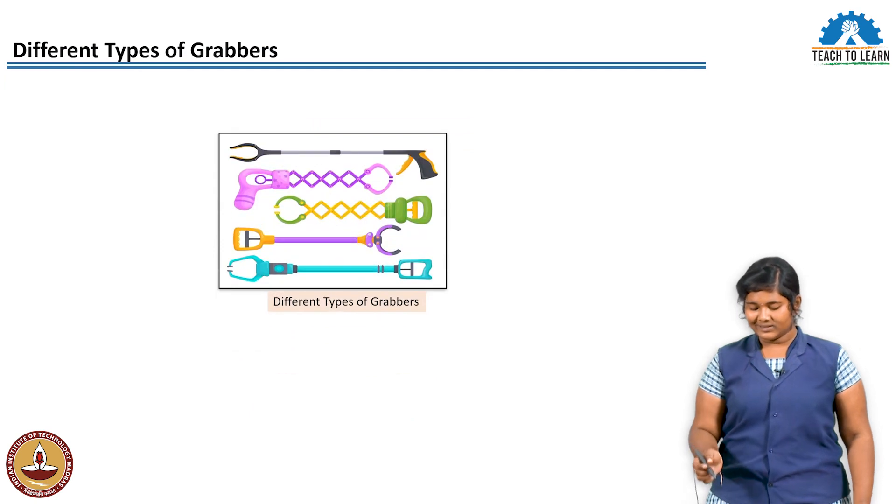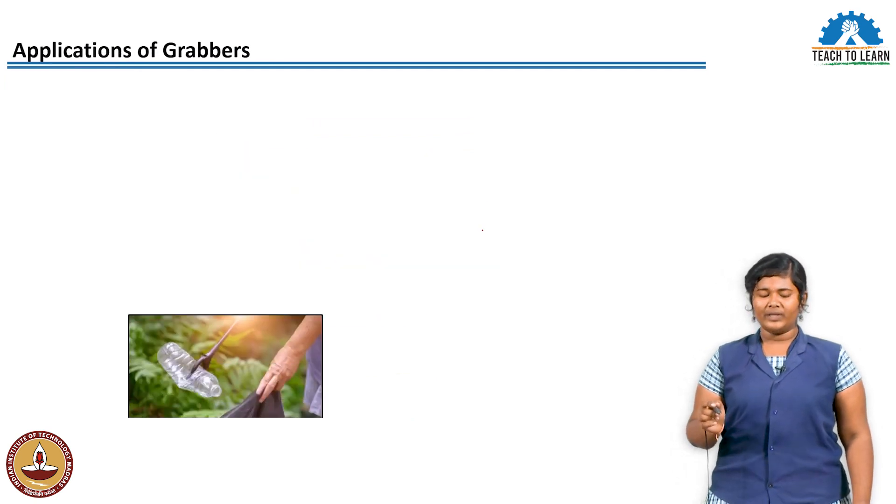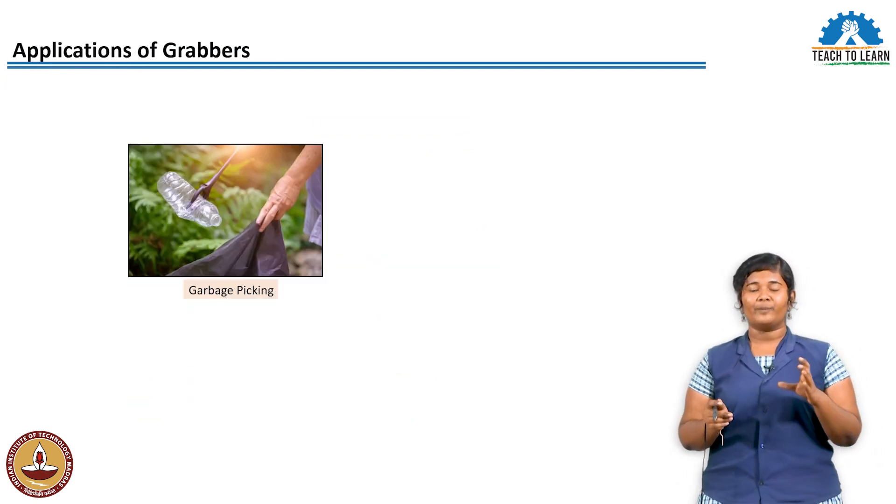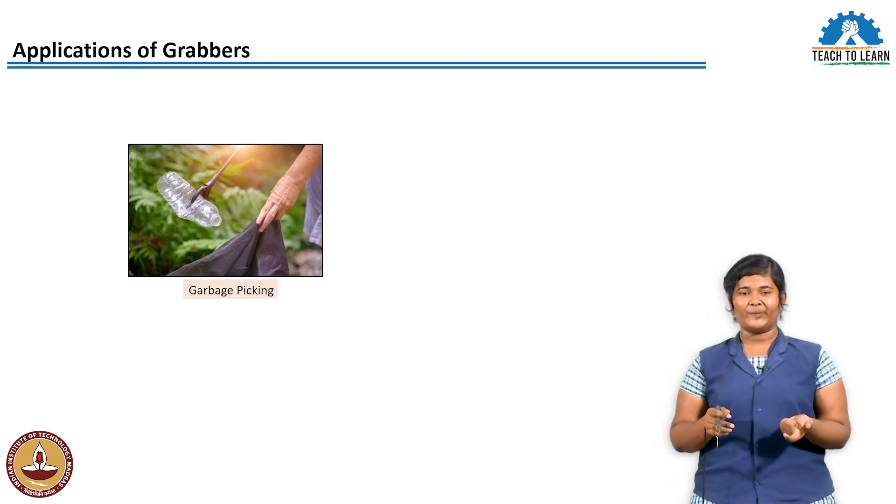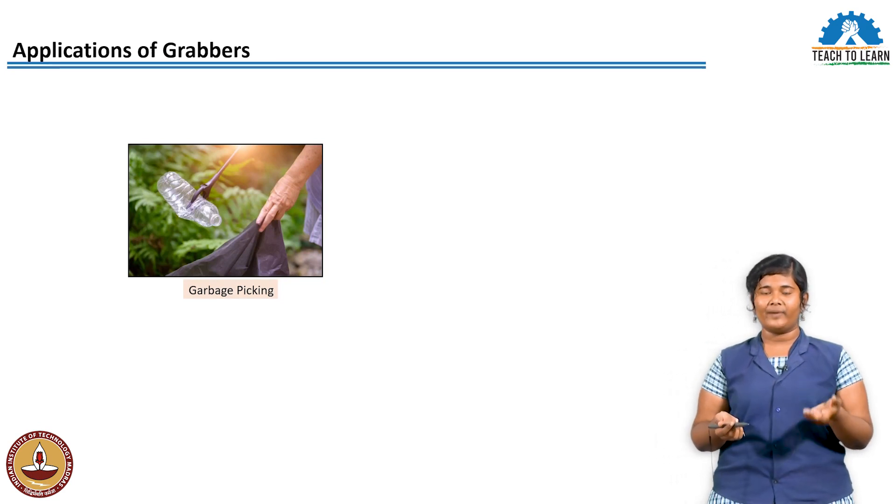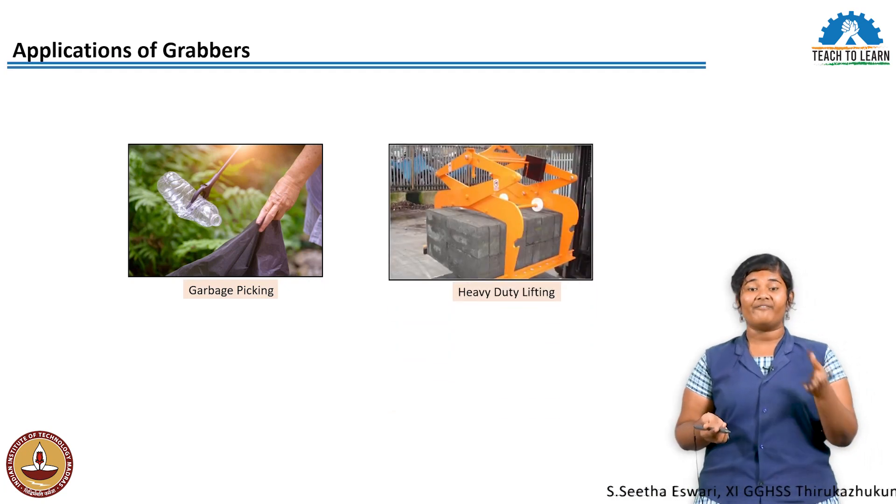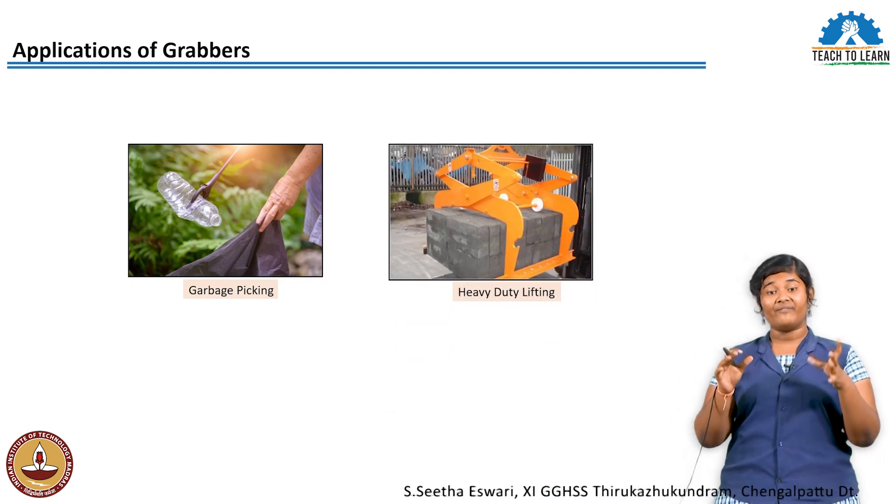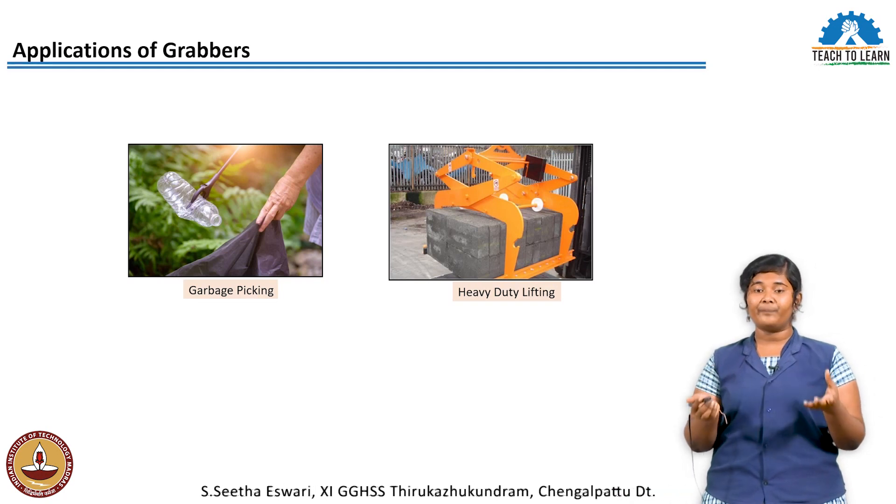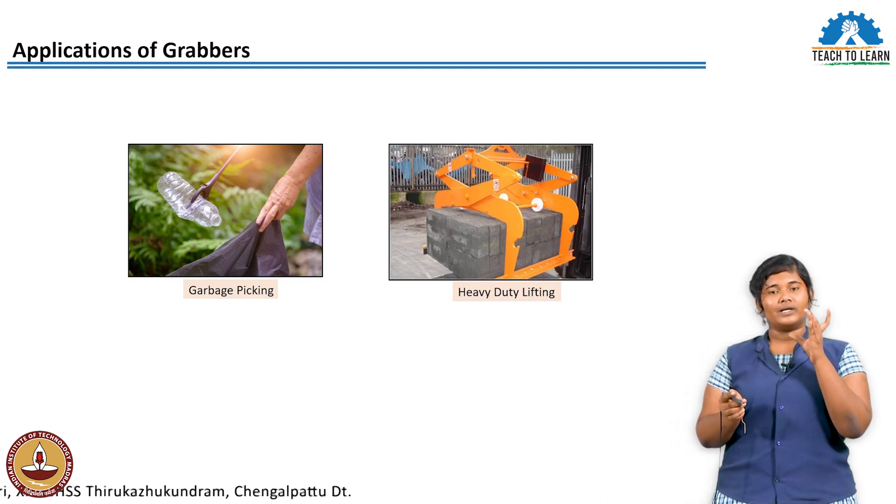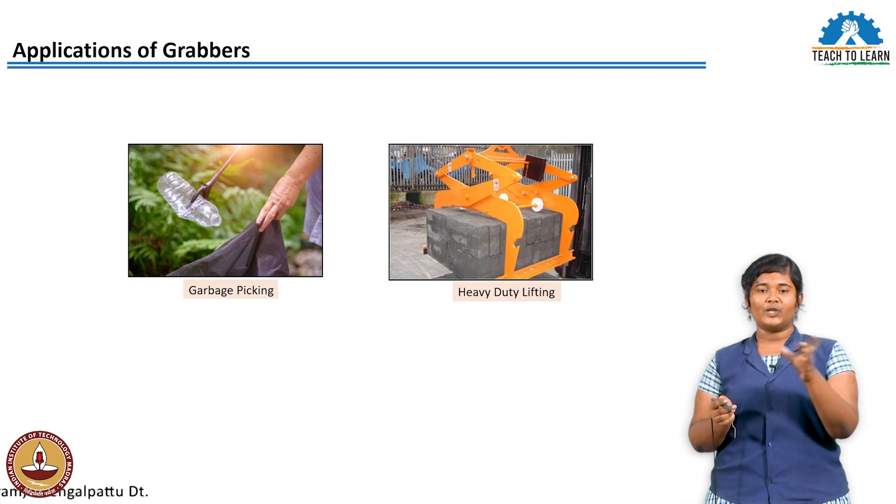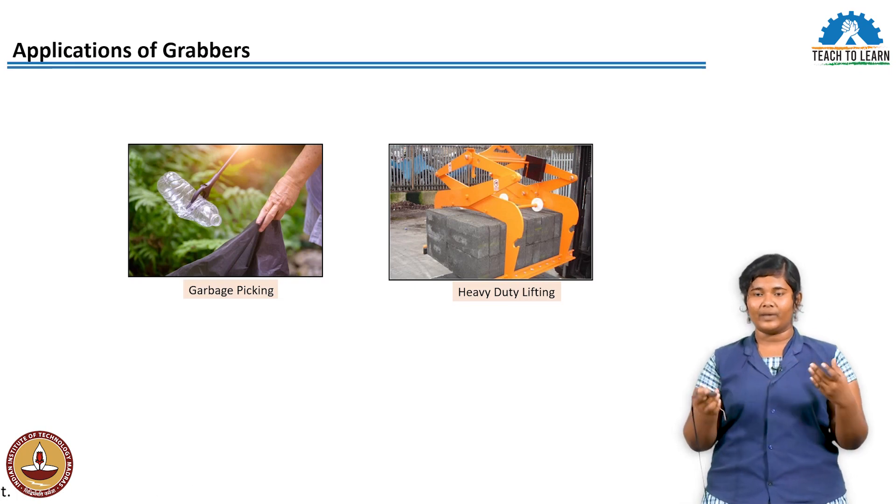You can see different types of grabbers. One is the basic grabber. The grabber is used to pick up waste. If we use the grabber in large scale in factories and industries, we can use it for heated objects and transfer them.